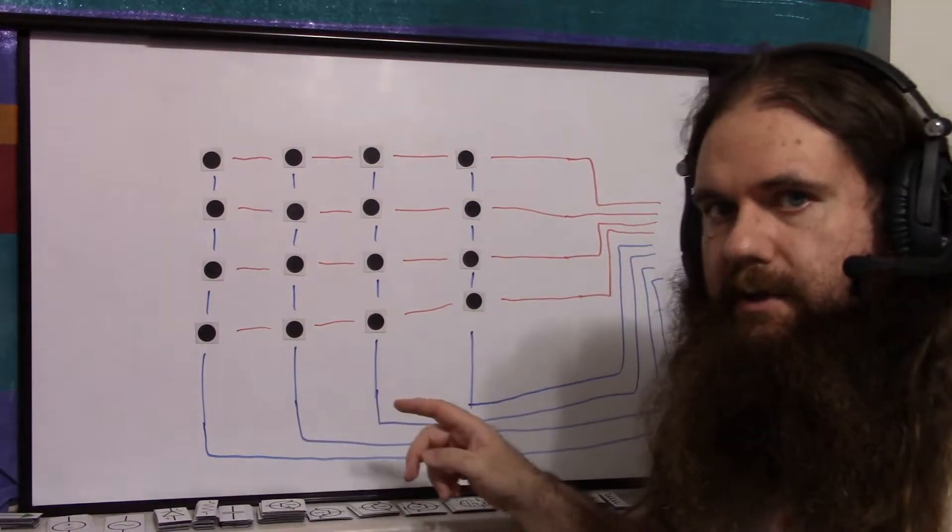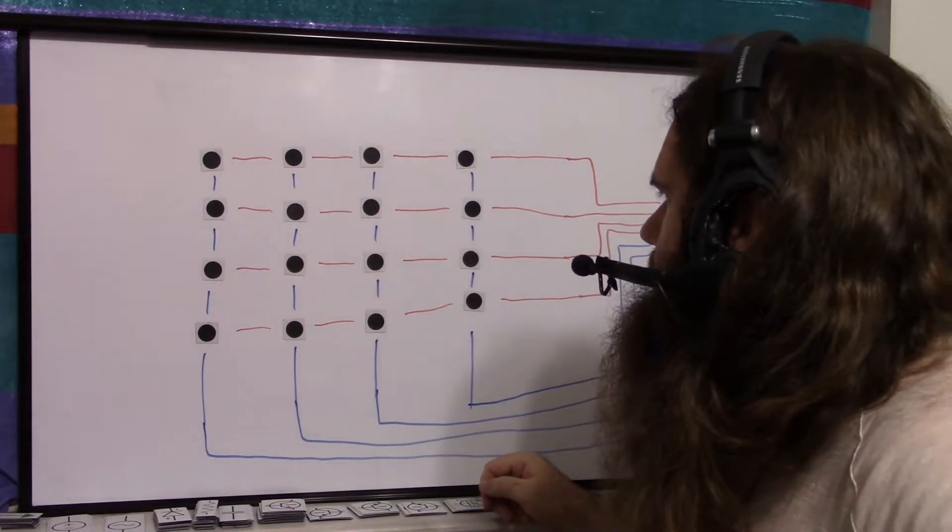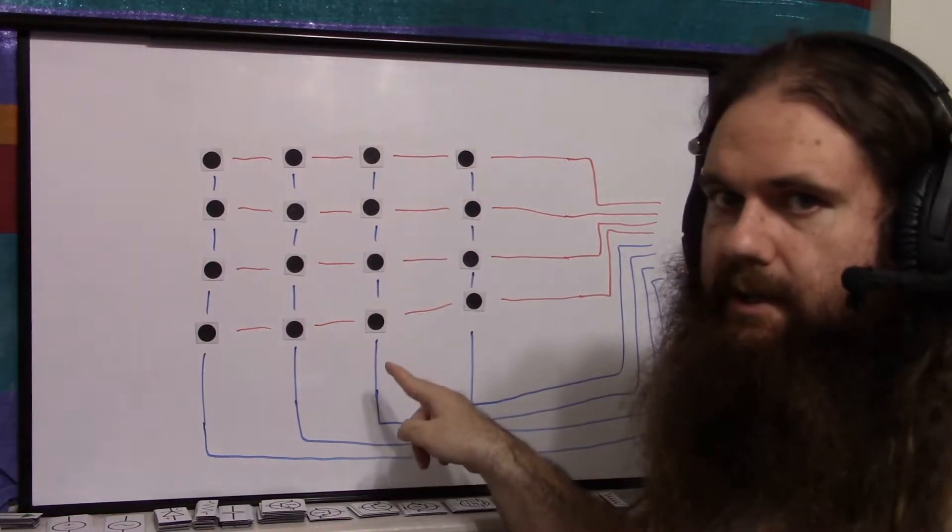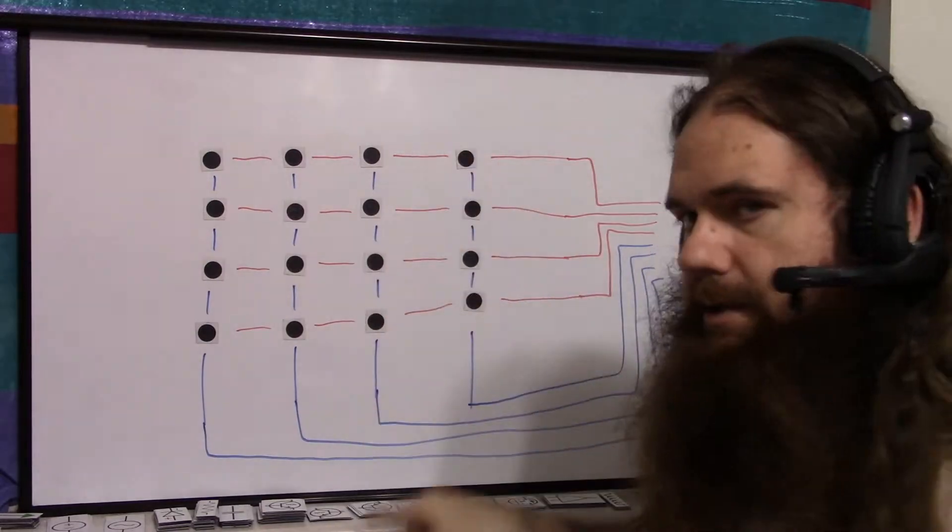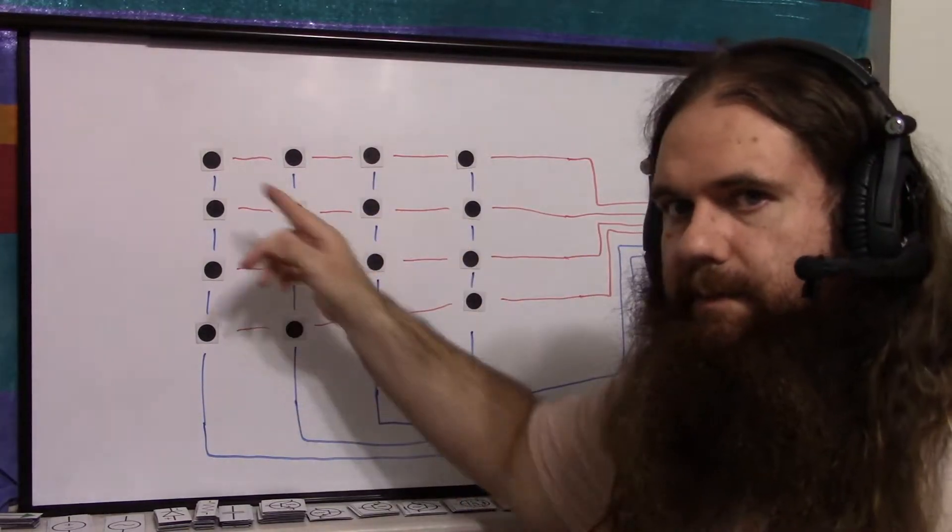So what you would do is you would apply power to just one row at a time. Because if you applied power to all four and then you tried to read this column, you can't tell the difference between those four buttons anymore. You don't know which one's pressed, you just know that one of them in that column is pressed. So you only want to power one row at a time and then read.